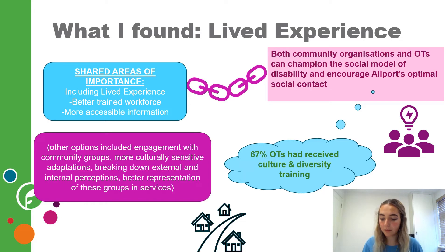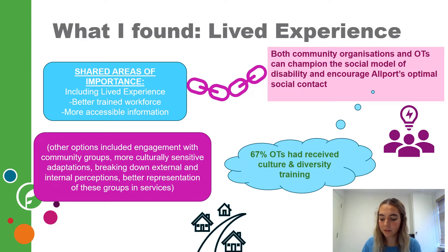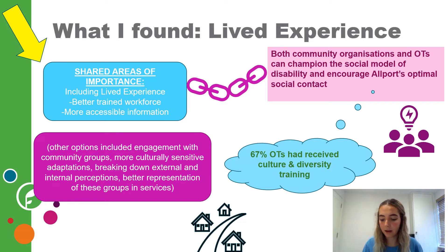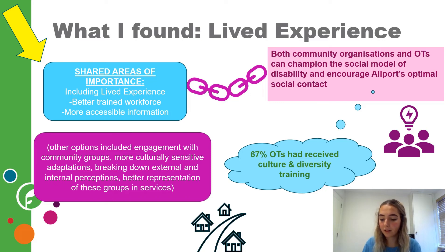Both surveys asked respondents to rank various priorities between one and seven, with one being most important and seven being least important, to meet the disability and housing needs of South Asian and Black African individuals. As evident in the shared areas of importance, despite other priority areas being provided, both groups prioritised similar areas. This confirms the importance of lived experience and an evolutionary professional and organisational culture to deliver this, and confirms that both groups share a goal of applying intersectionality for South Asian and Black African inclusion, meeting Allport's criteria for optimal social contact.